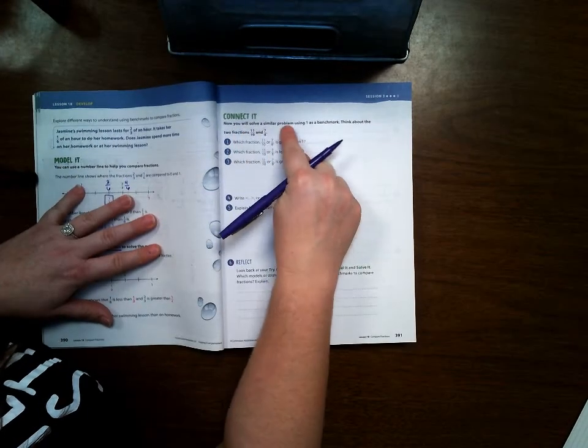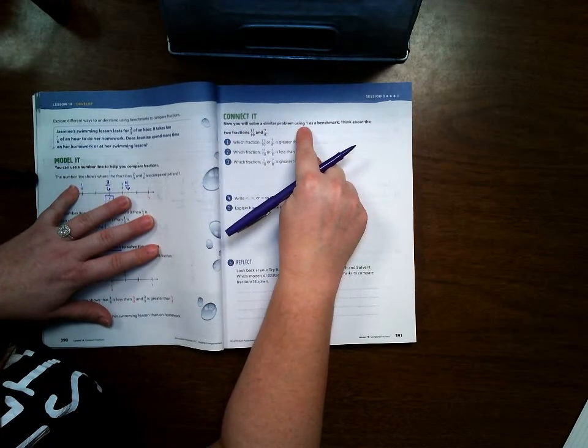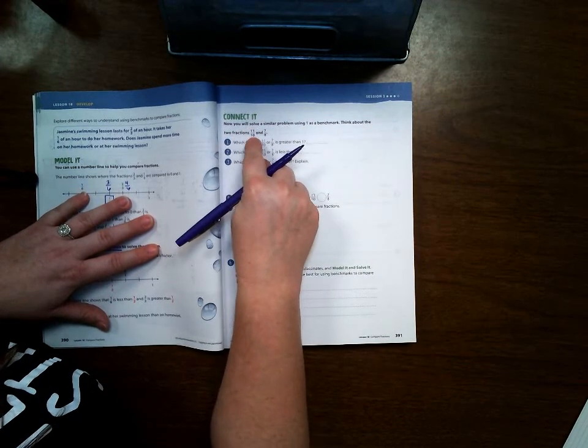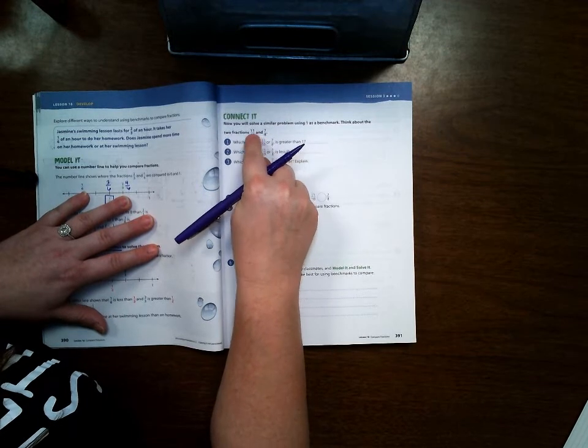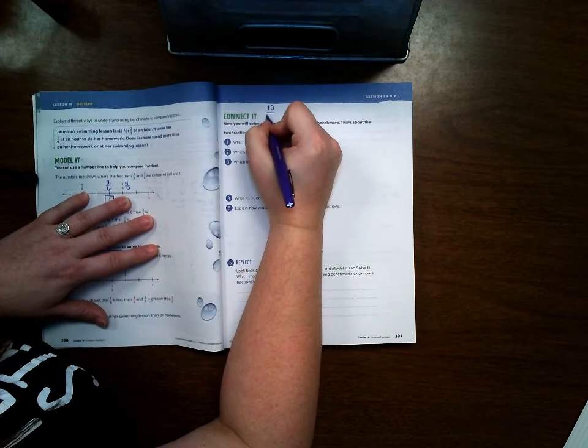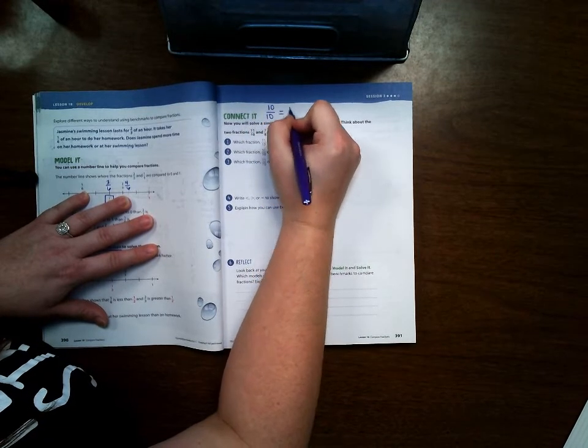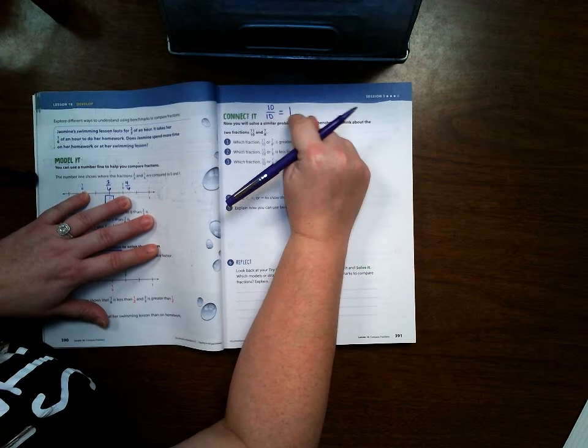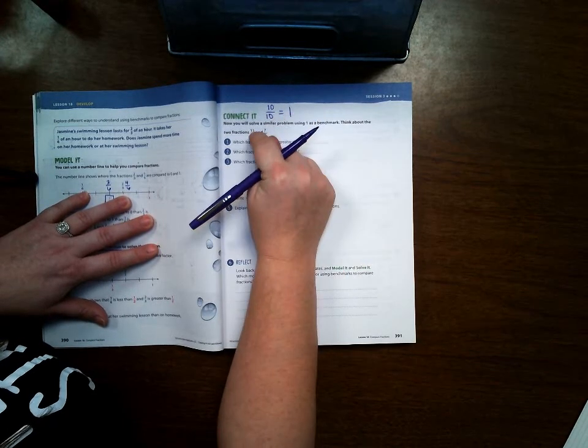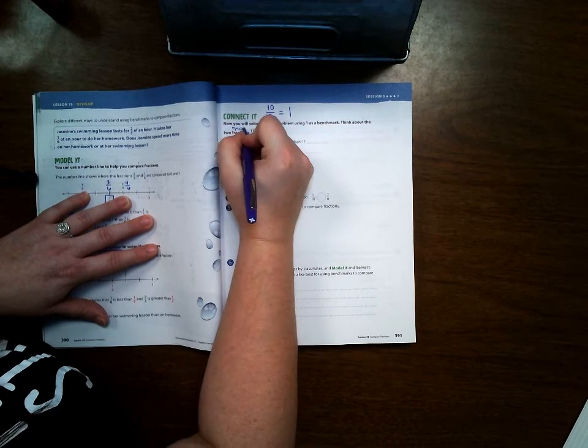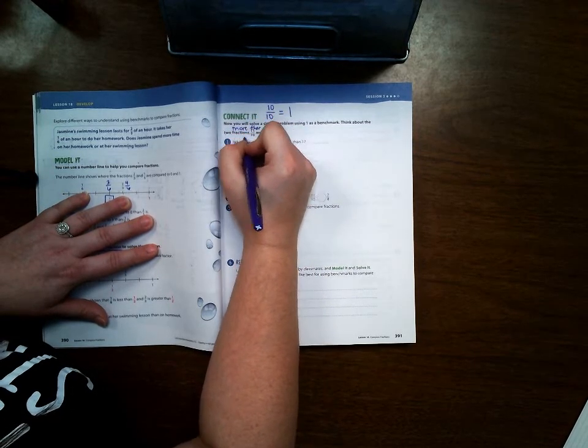Now you will solve a similar problem using one whole as a benchmark. Think about the two fractions, eleven-tenths and seven-eighths. Well, if I had ten-tenths, that would be equal to one whole, because anytime you have a number on top of another number, that's one whole. So since 11 is bigger than ten, that means that eleven-tenths is more than one whole.